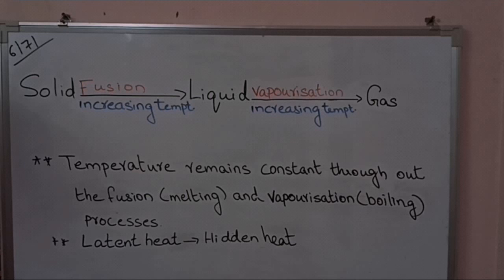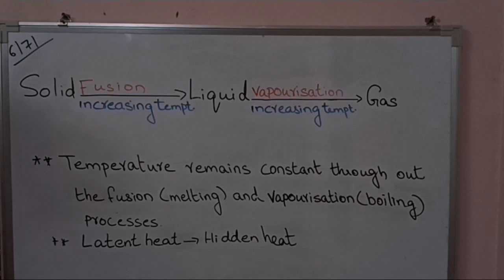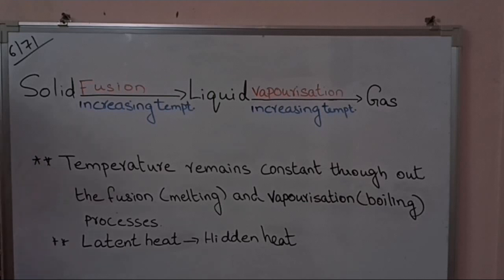We have seen the example of ice. On melting ice, the temperature remains constant at 0 degrees Celsius throughout the melting process. And on the boiling of water, the temperature remains constant at 100 degrees Celsius throughout the boiling process. The supplied heat is hidden inside the contents of the beaker to overcome the force of attraction between the particles of solids and liquids.